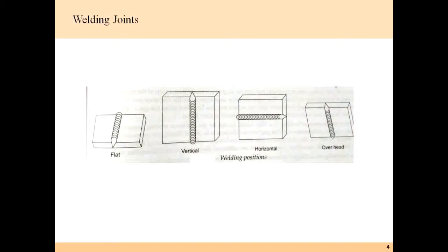Welding joint positions depend on where you are going to weld and where you join the element. The first is flat welding, where the element is parallel with the ground and you fill the gap between the surfaces of two flat elements. In vertical welding, two pieces are perpendicular to the ground and the welding is done in the vertical direction.